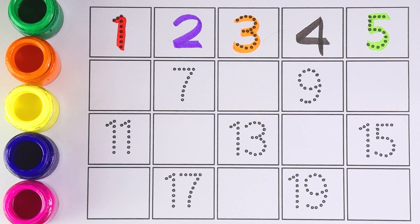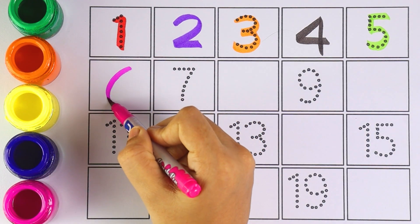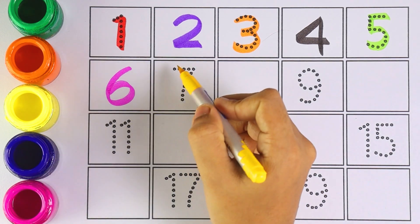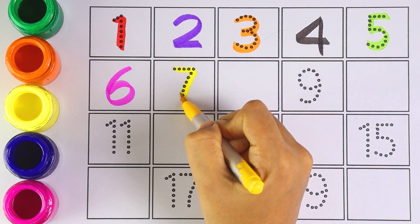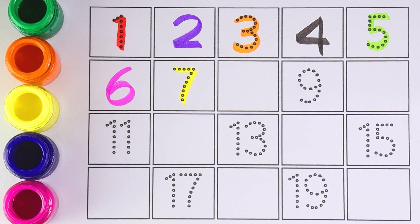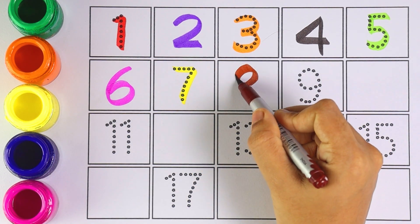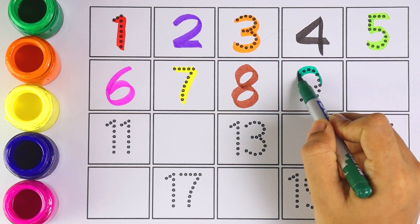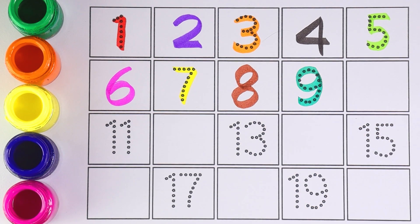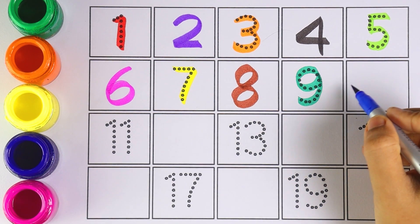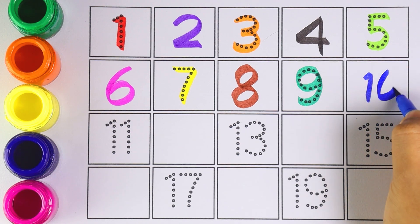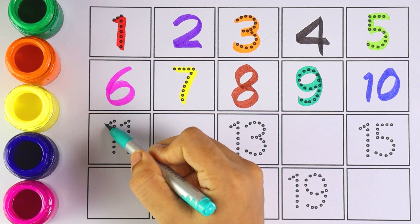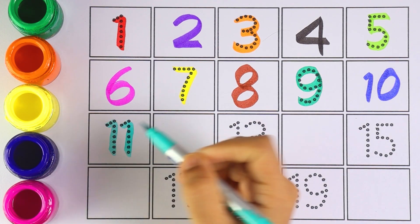Number five, number six, number seven, number eight. Number nine, number ten — one and zero makes the number ten. Number eleven.